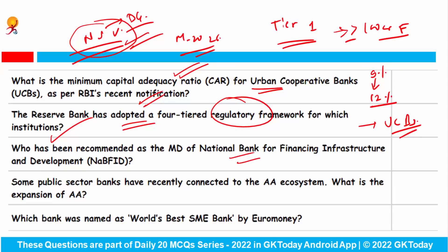Who has been recommended as the MD of National Bank for Financing Infrastructure and Development? The answer is G Rajkiran Raiko.